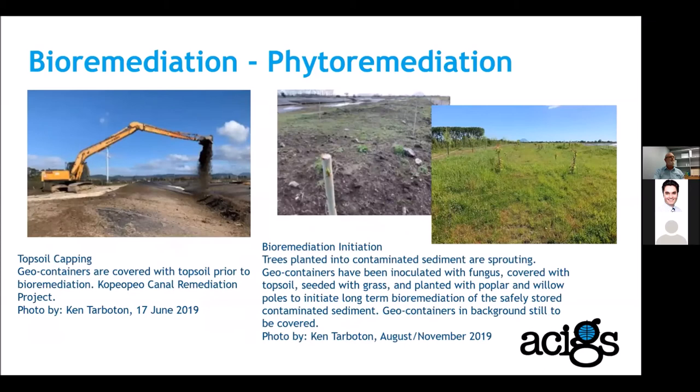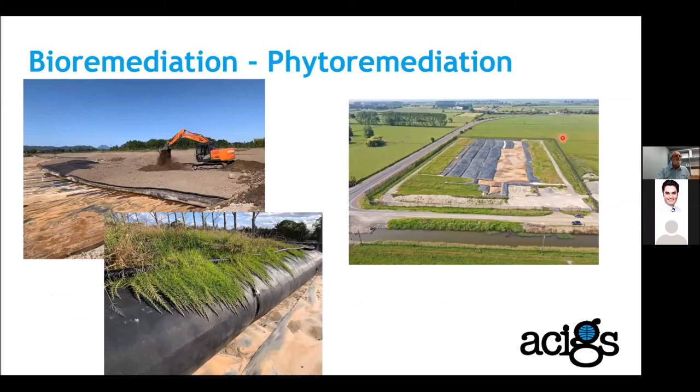Once geotube pumping was completed, the containers were inoculated, covered over with topsoil, and planted with grasses, willows and poplar stakes directly through the geotextiles. The site is now greening up nicely — the kikuyu grass is establishing very well. They didn't get the whole area covered in the first season but the ultimate aim is to get the whole lot covered.